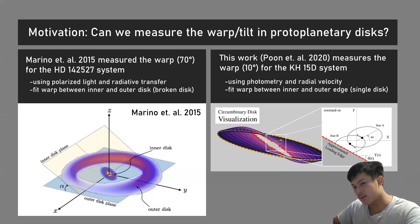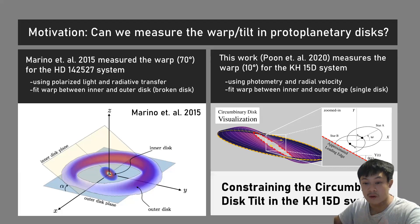We're instead using photometry and radial velocity to measure a relatively small warp in a protoplanetary disk that is not broken. It's singular, and we try to fit a warp which ends up to be pretty small, hence the name of our work constraining the circumbinary disk tilt in the KH15D system. Here's a visualization of what we think the circumbinary disk could look like.